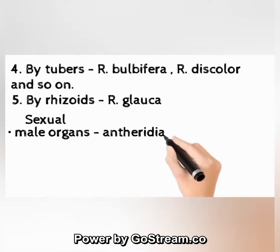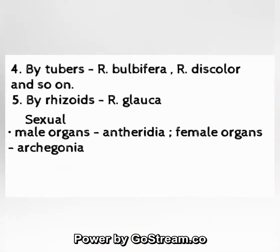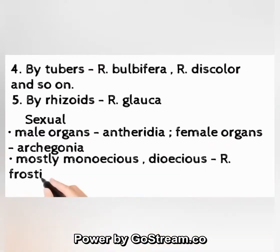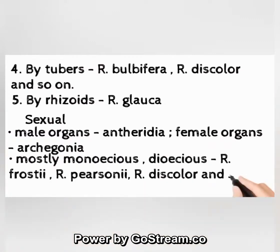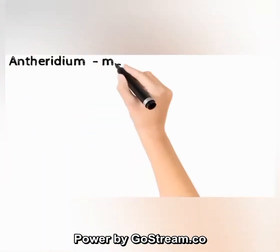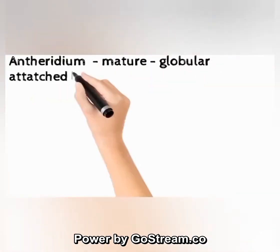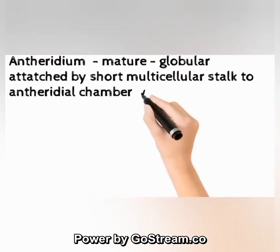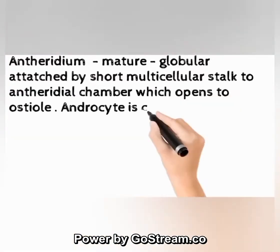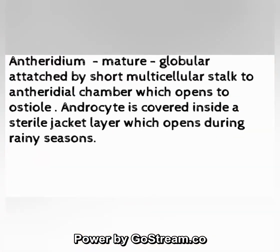Vegetative reproduction also by rhizoids in R. glauca. Sexual reproduction: male organs are antheridia, female organs are archegonia; mostly monoecious; dioecious in R. frostii, R. perennis, R. discolor, and so on. Mature antheridium is globular, attached by a short multicellular stalk to the antheridial chamber, which opens to the outside. The androcyte is covered by a sterile jacket layer.